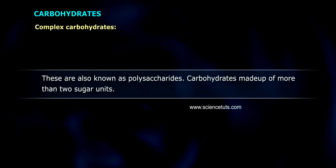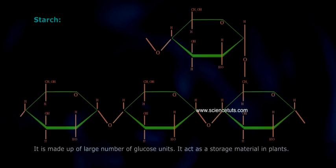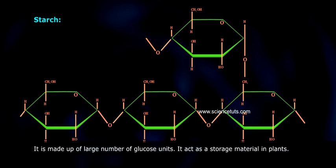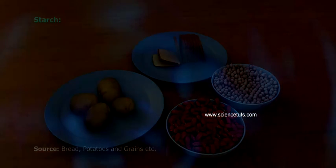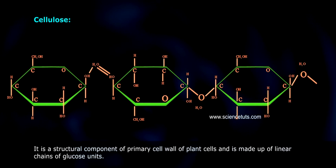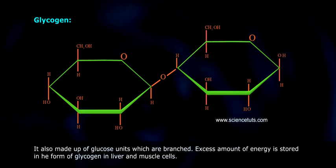Complex carbohydrates are also known as polysaccharides — carbohydrates made up of more than two sugar units. 1. Starch — made up of a large number of glucose units; acts as a storage material in plants, found in bread, potatoes, and grains. 2. Cellulose — a structural component of the primary cell wall of plant cells, made up of linear chains of glucose units. 3. Glycogen — also made up of branched glucose units; excess energy is stored as glycogen in liver and muscle cells.